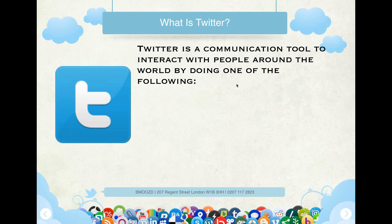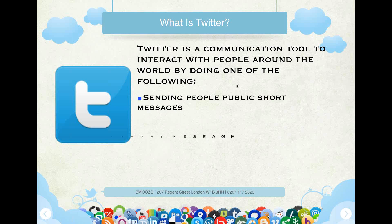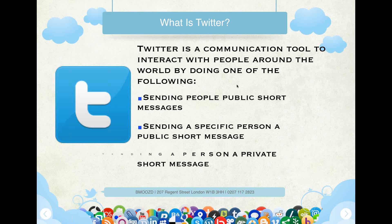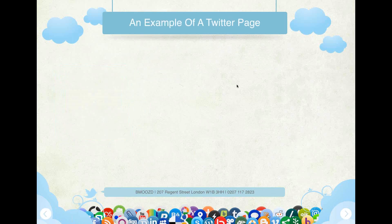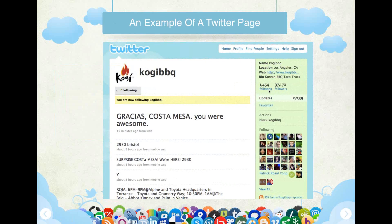Twitter is a communication tool to interact with people around the world by doing one of the following: sending people public short messages, sending a specific person a public short message, or sending a person a private short message. Here's an example of a Twitter page — as you can see, the followers and following: 37,000 followers, 1,400 following.